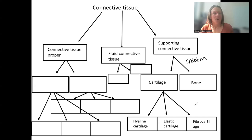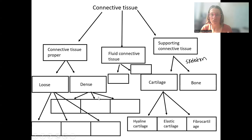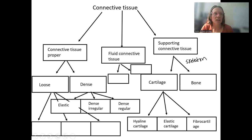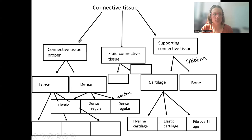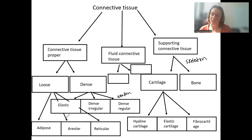Under connective tissue proper, we have loose and dense — those names describe the composition of the extracellular matrix. Dense types are elastic, dense irregular, and dense regular. Dense regular makes up tendons, which are strong with fibers packed tightly together. The loose types are adipose (fat tissue), areolar, and reticular — these all have a lot more ground substance or fluid overall, making them looser.